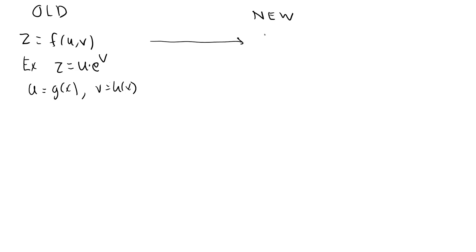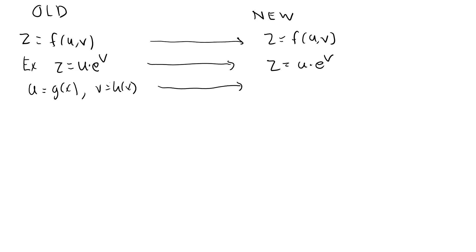We're going to keep z as some function of u and v — that is the outer function. We'll even keep the example z equal to u times e to the v. However, in this case, we will allow u to be a function of not just one variable, but two variables: u is a function of x and y.